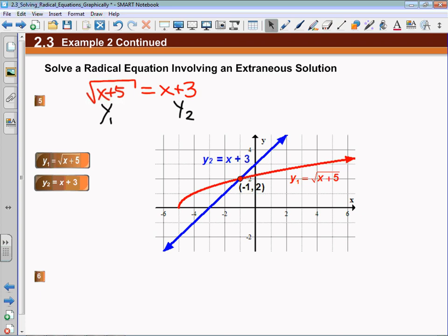And then y2 is a nice linear equation. Using second trace intersect, you would find that these two graphs intersect at negative 1 comma 2. That means that negative 1, the value of x, is the solution to that particular equation.